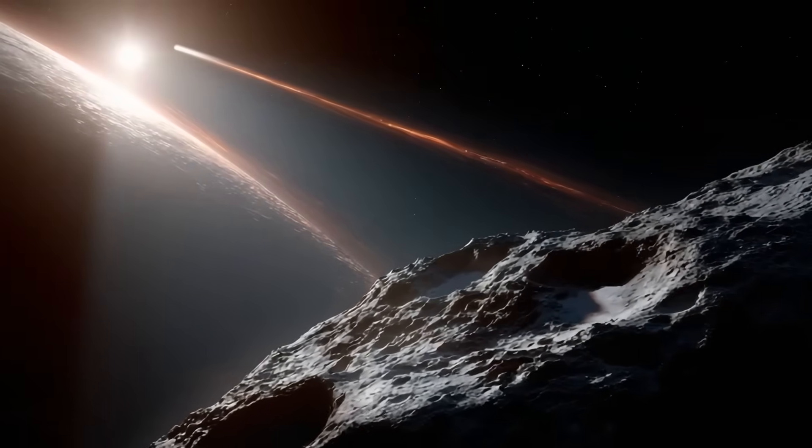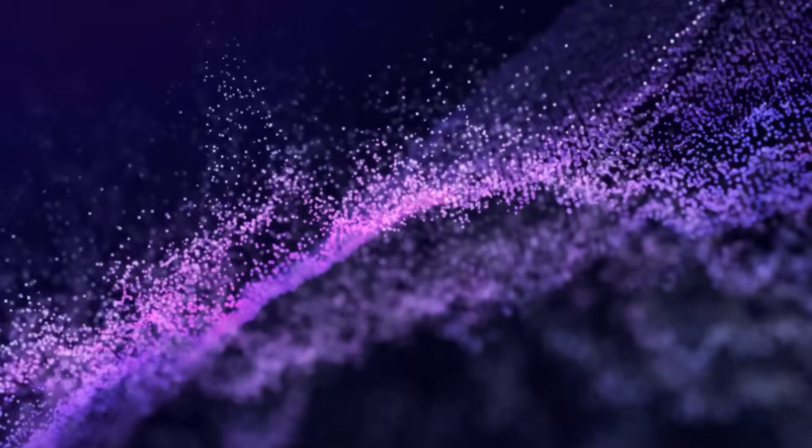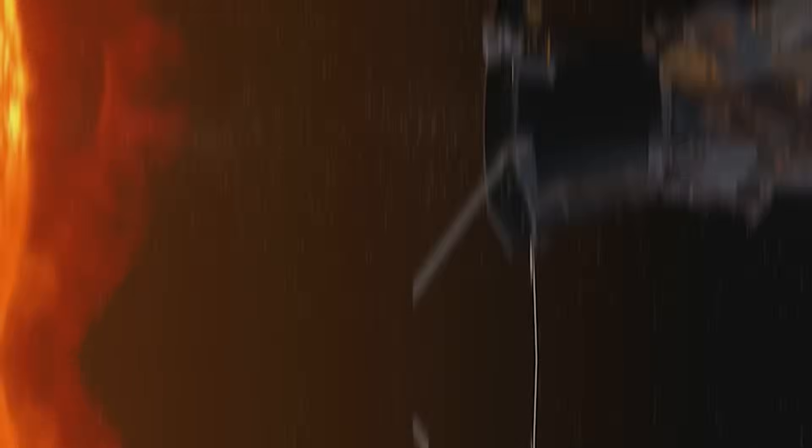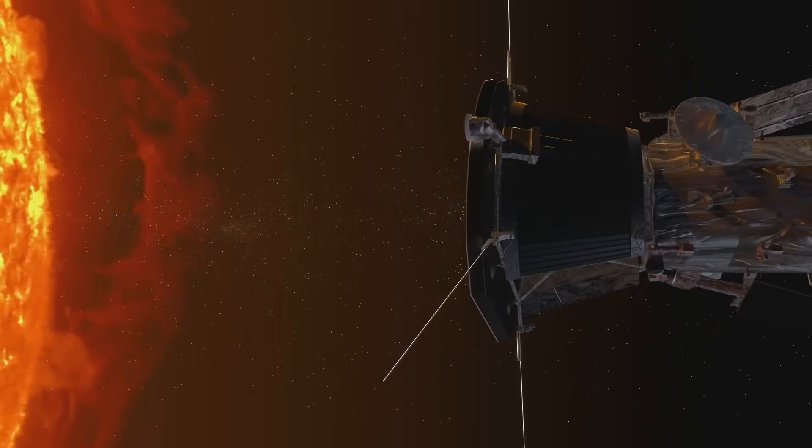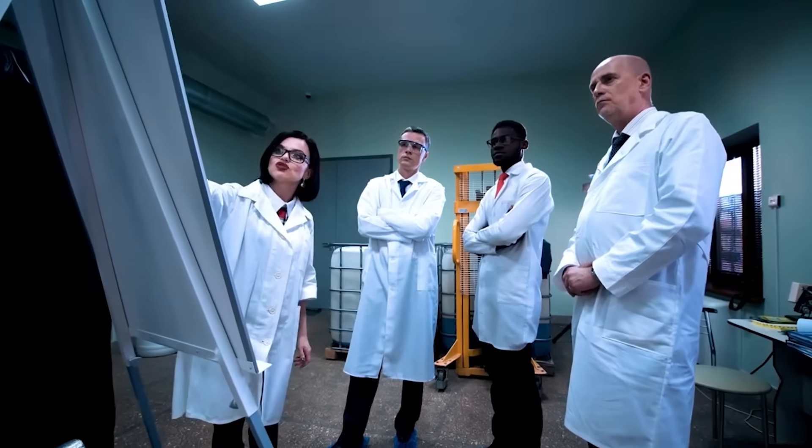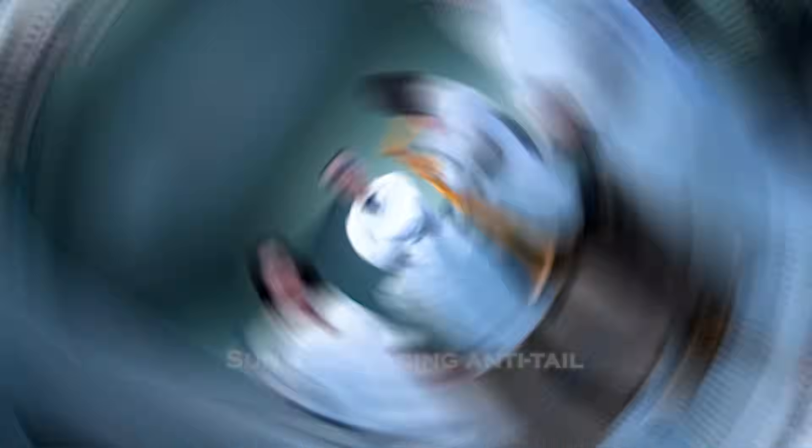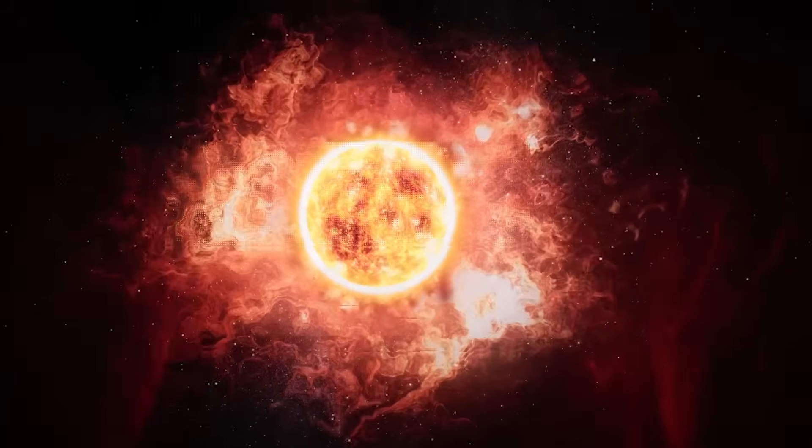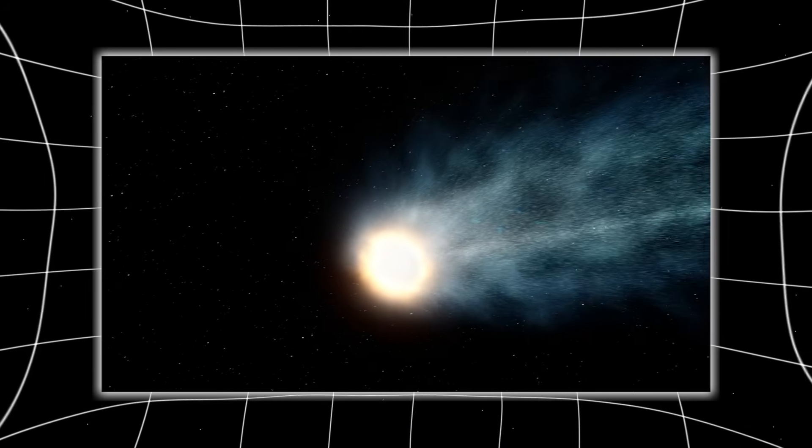This alone signals intense activity, ionized gases slamming into the solar wind while solid material escapes the nucleus. But then came the detail that breaks the model entirely. After perihelion, astronomers observed a sunward-facing antitail, shaped like a luminous teardrop, pointing directly toward the sun.